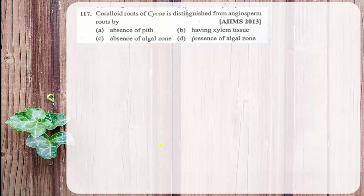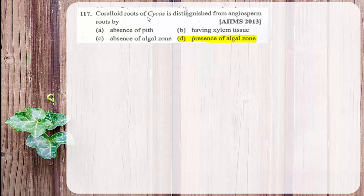Coralline roots of Cycas are distinguished from angiosperm roots by — options: absence of pith, having xylem tissue, absence of algal zone, presence of algal zone. Coralline roots of Cycas show a symbiotic association with cyanobacteria (blue-green algae). Therefore, the right answer is presence of algal zone — this is the differential character distinguishing coralline roots from angiosperm roots.